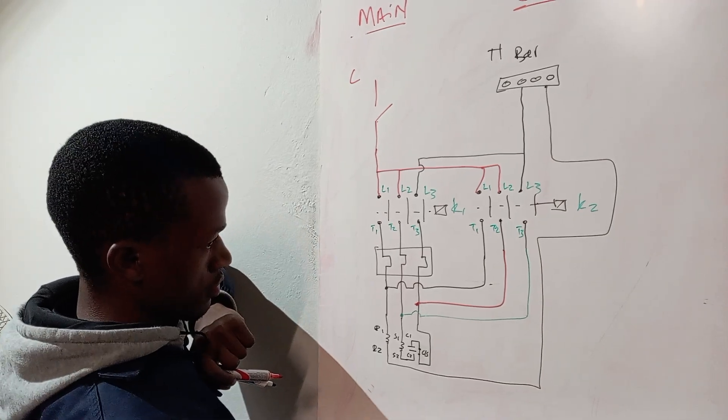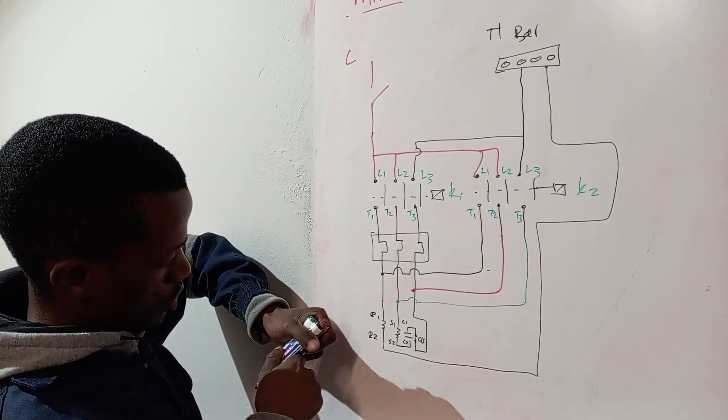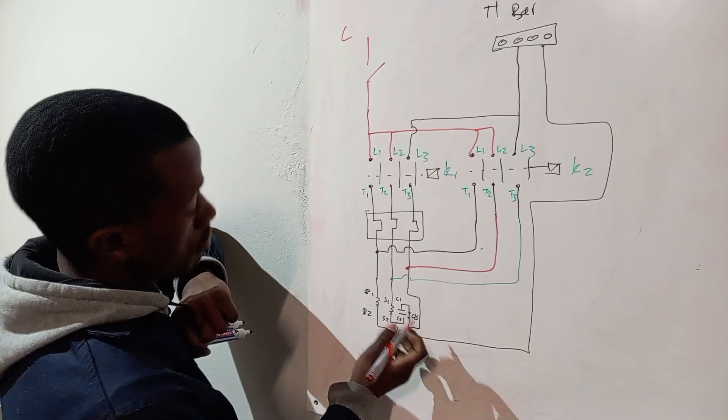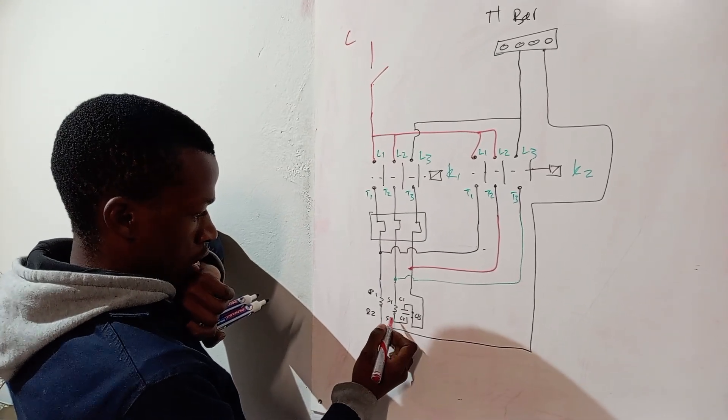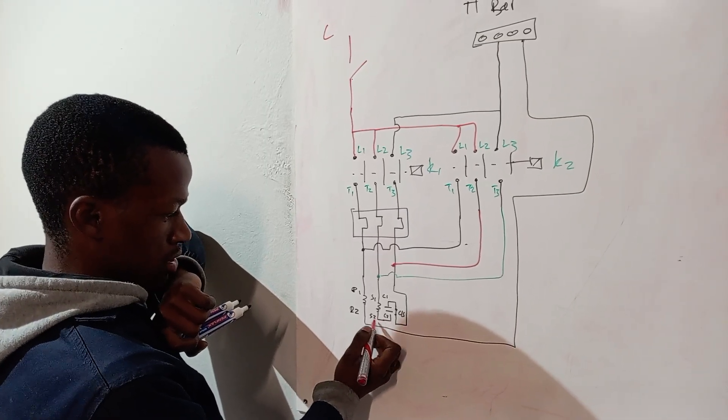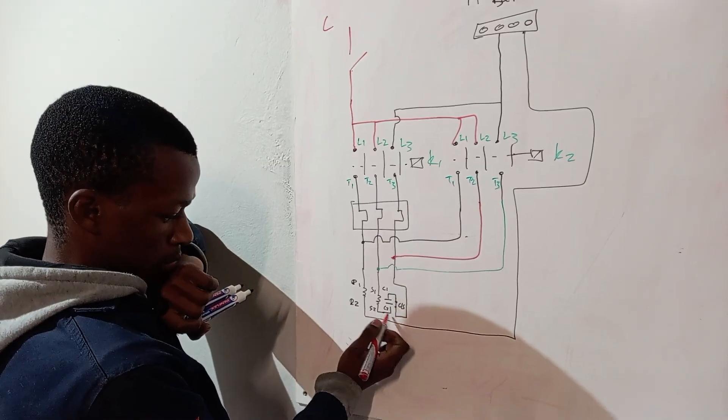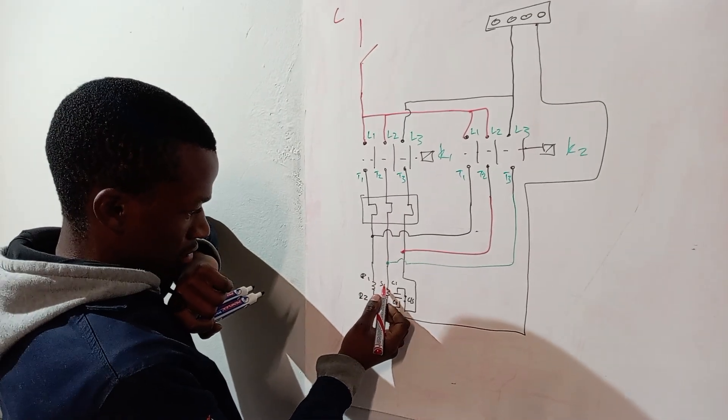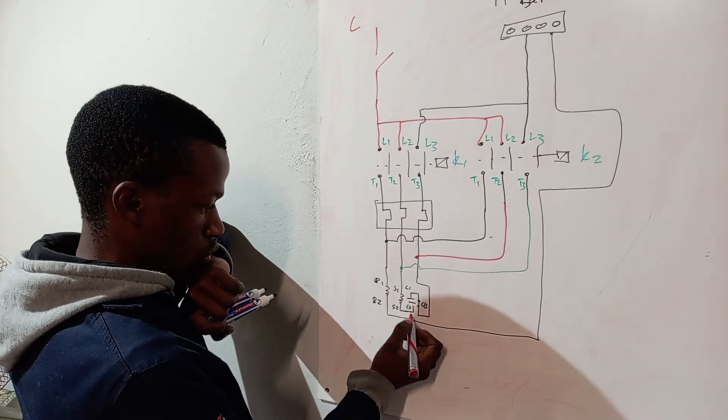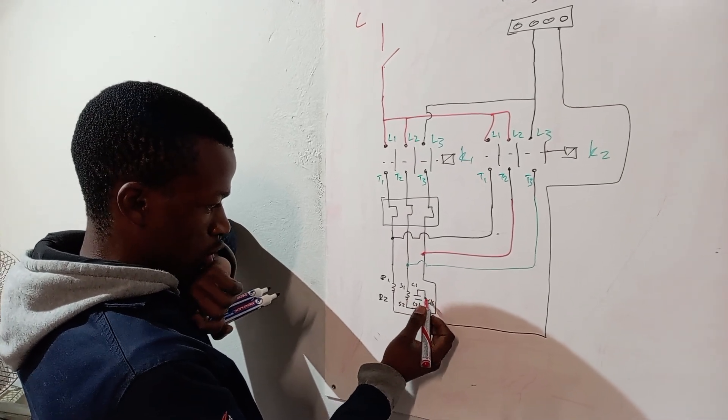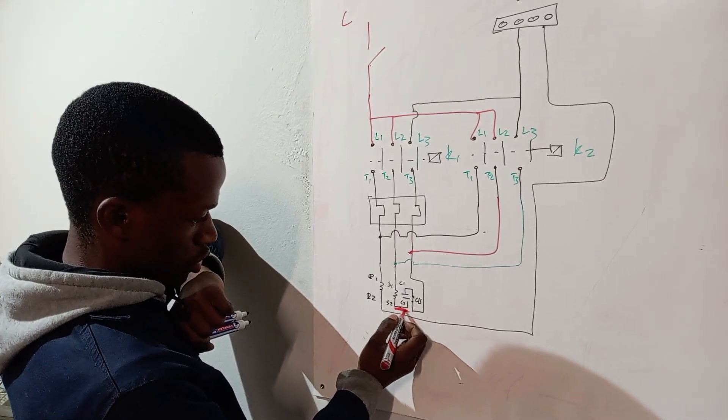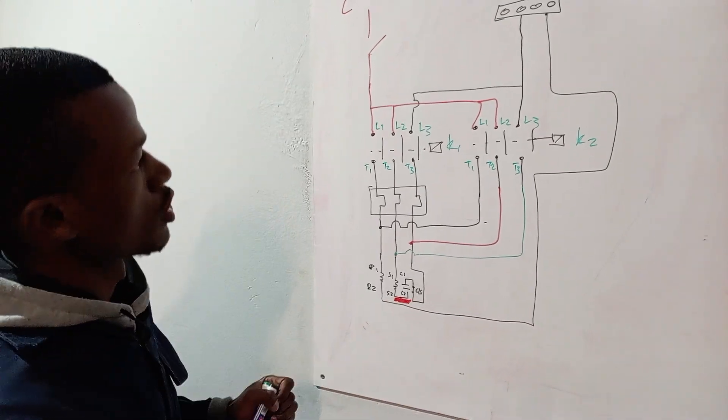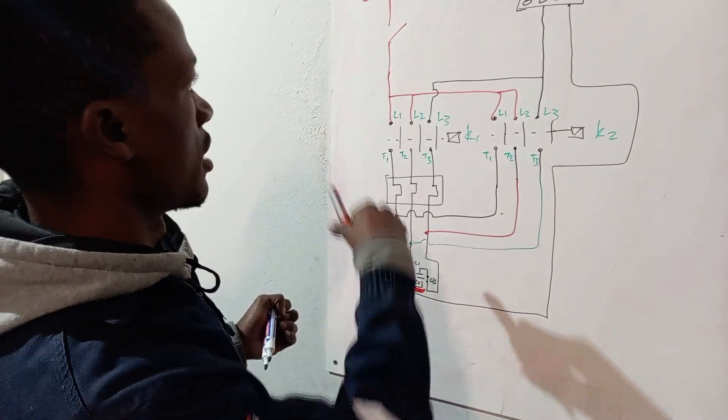So yeah, this is how you draw your single phase forward reverse. But now this one you have to make sure that is connected. Your S2 and your C2, you must make sure that you connect it yourself. Most of the time on the motors, your running winding they will be connected internal, even S1 and S2 internal, C1 and C2 internally, and your centrifugal switch will be connected. But now this part you have to be careful, you have to connect it yourself.